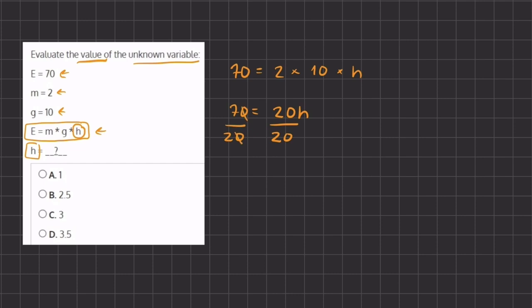And we can easily cross out the zeros because we can divide by 10, and now we are left with 7 divided by 2 equals h because these 20s canceled out to 1.